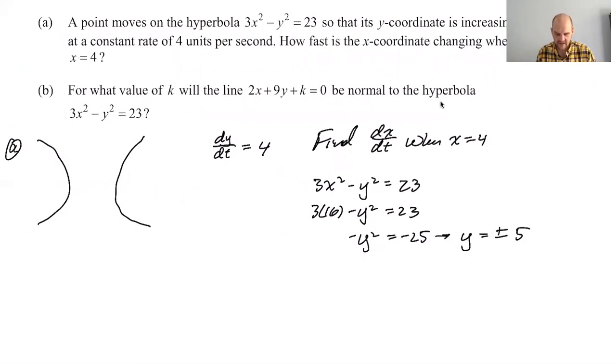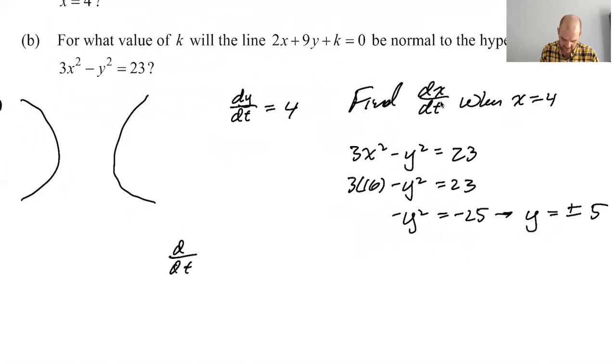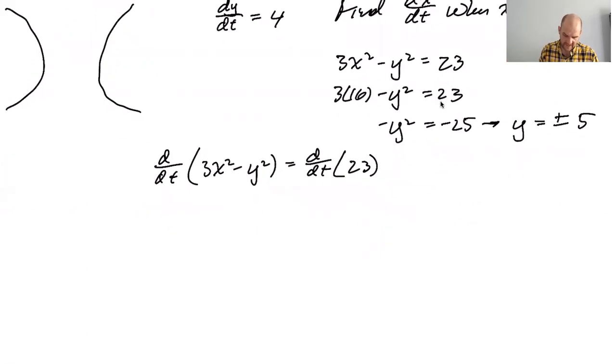So we are trying to find dx dt when x equals four. So a lot of fours in this problem. So I have three x squared minus y squared equals 23. So three times 16 minus y squared is 23. So then negative y squared is negative 25. So y is actually plus or minus five.